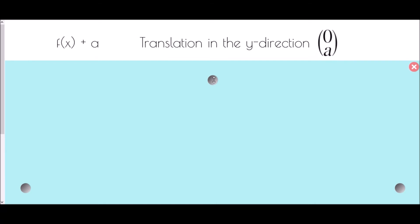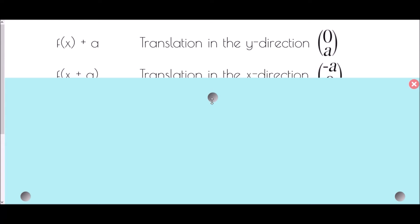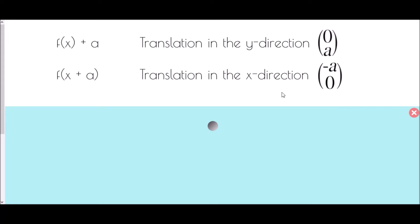So how can we describe what has happened? Using the language of transformations: moving the graph left, right, up, or down means it is a translation. When we have f of x plus a value added outside the bracket, the translation is in the y direction — so adding 3 moves it up 3, subtracting 6 moves it down 6. When the addition or subtraction is within the bracket — happening to the x — it moves in the x direction. Importantly, if it says add a, the graph goes to the left; if it says subtract, it goes to the right — it is the opposite direction.